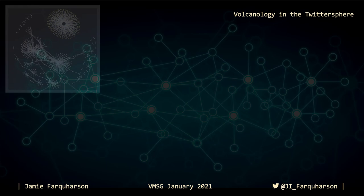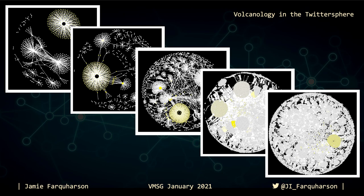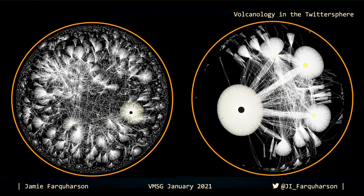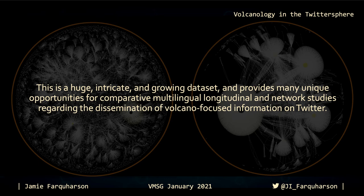As we look at larger and larger networks, we see that connectivity tends to increase but the importance of central or key nodes still remains. When we look at networks with several tens of thousands or even hundreds of thousands of nodes, we observe some very complex patterns. This is a huge, intricate, and growing dataset that provides many unique opportunities for comparative multilingual, longitudinal, and network studies regarding the dissemination of volcano-focused information on Twitter.